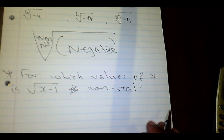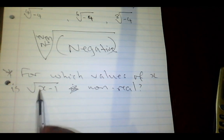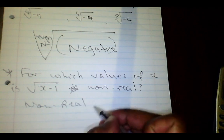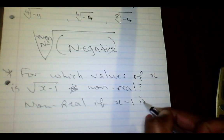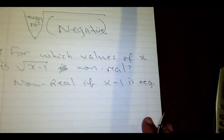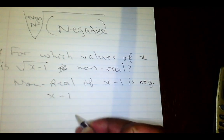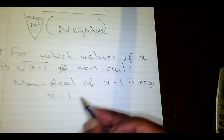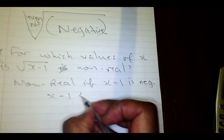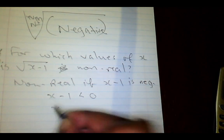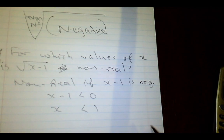We said that the square root of a negative number is non-real. So the square root of (x minus 1) will be non-real if (x minus 1) is negative. Any number smaller than zero is negative, so x minus 1 must be smaller than zero. Moving the minus 1 to the other side gives us x is smaller than 1.